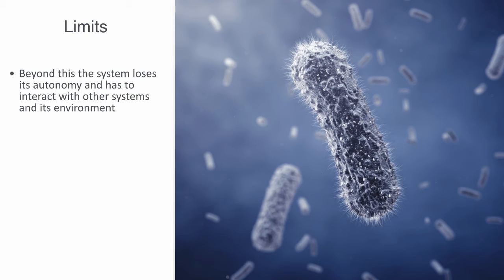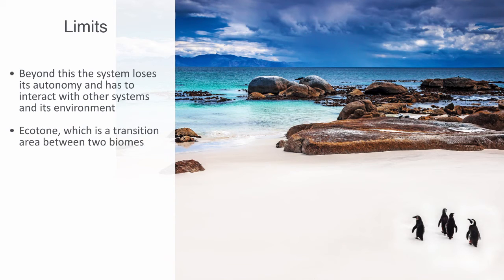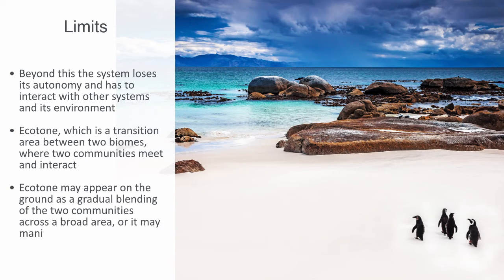Within ecosystems, this boundary may be termed an ecotone, which is a transition area between two biomes, where two communities meet and interact. An ecotone may appear on the ground as a gradual blending of two communities across a broad area, or it may manifest itself as a sharp boundary line, such as a cliff or seashore.